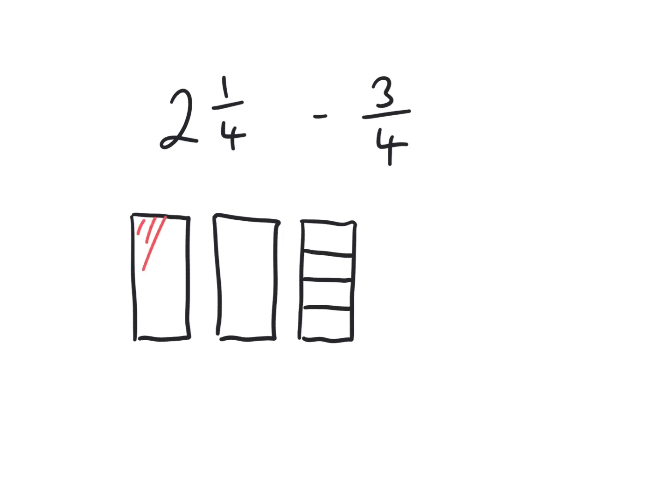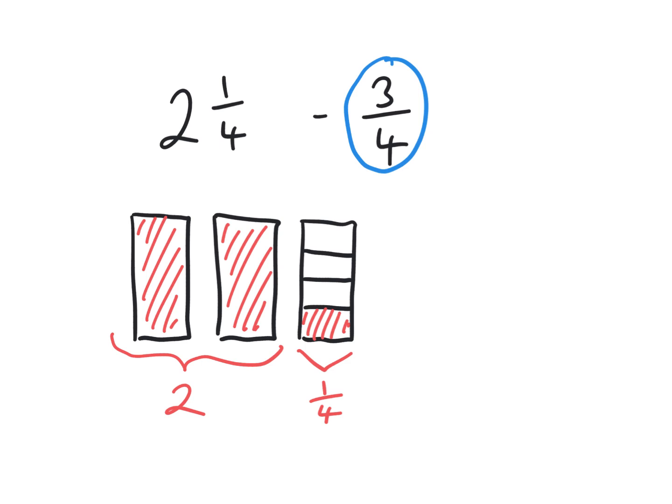So here's our 2 whole bars and a quarter. There's our quarter there. Now we're going to subtract the 3 quarters here. So I can subtract a quarter here. So that's disappeared.